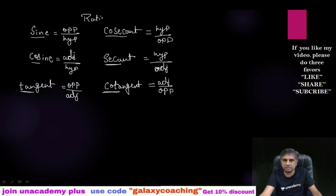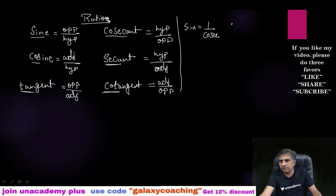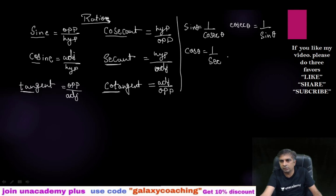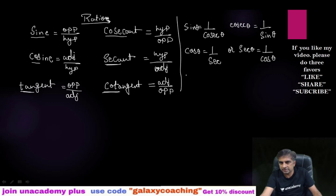Now the relationship between the ratios: sine theta equals one by cosec theta, or cosec theta equals one by sine theta. Cos theta equals one by sec theta, or sec theta equals one by cos theta. Then tan theta can be written as one by cot theta, or you can also write it as sine theta by cos theta.